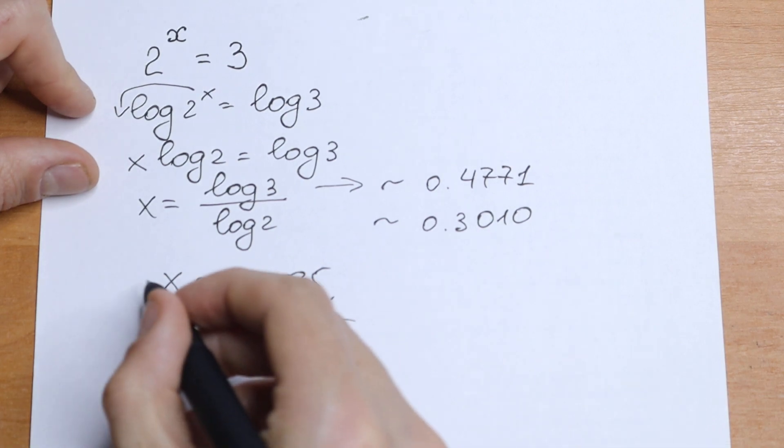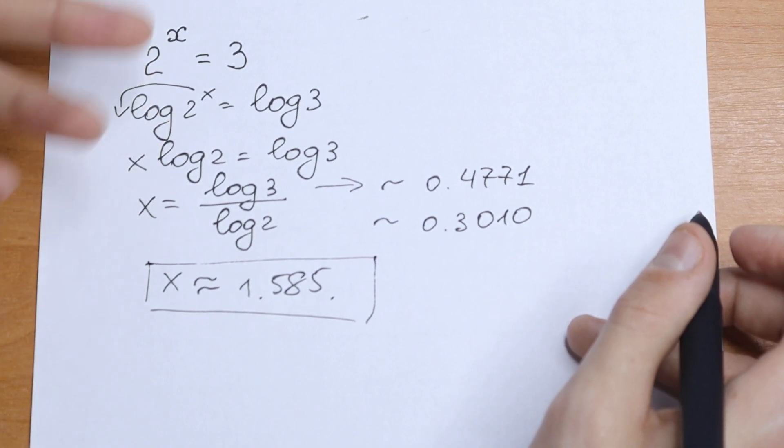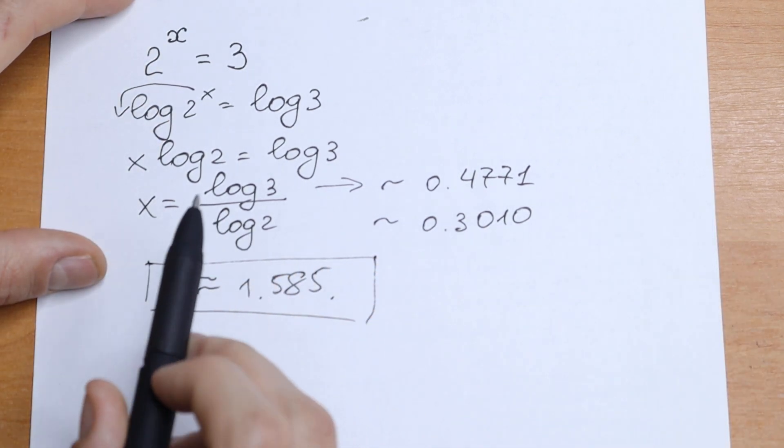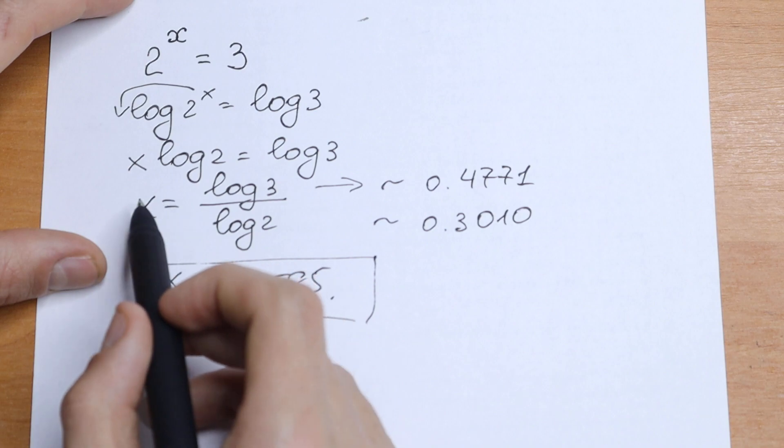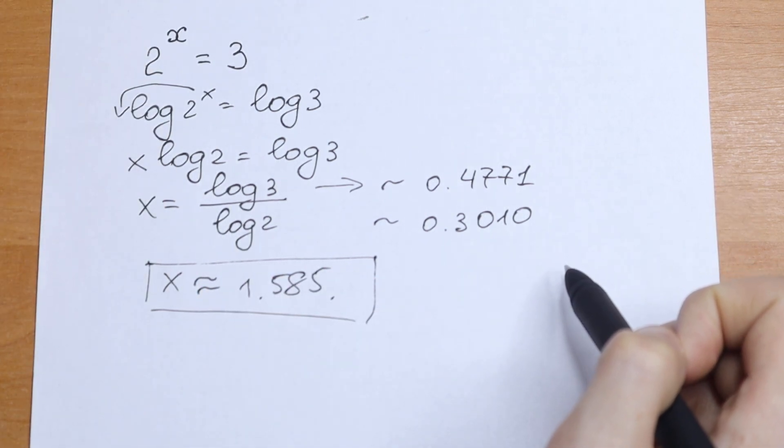This is our approximate answer and this is our answer if we're talking about simplifying methods. We have the approximate answer and our answer is x equal to log 3 over log 2. This is our answer.